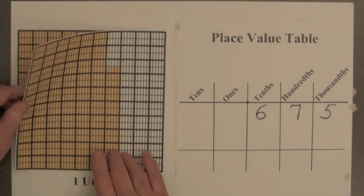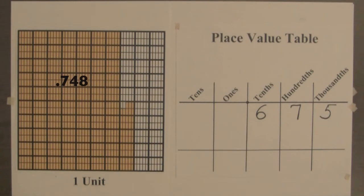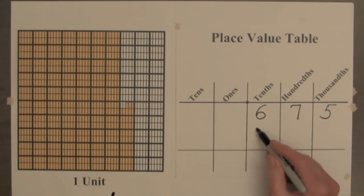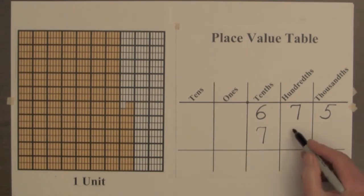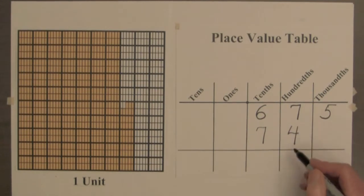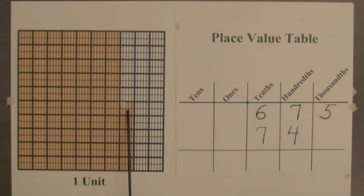The next square represents seven hundred and forty-eight thousandths. There are seven full columns — seven tenths — four hundredths, and five, six, seven, eight tiny thousandths.